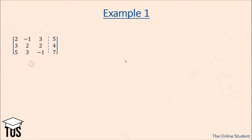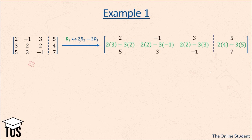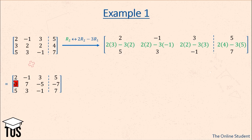Let's head back to our example. We have this augmented matrix. The first row operation we perform is: the second row becomes 2 times the second row minus 3 times the first row. For the first element: 2 times 3 minus 3 times 2 equals 6 minus 6, which gives us 0. We do this for every element in the second row, giving us our first zero beneath the leading element.